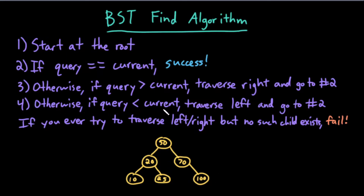Similarly, if my query is less than the current node, I would traverse left and repeat this process. Because every node in a given node's left subtree is less than that node, and every node in a given node's right subtree is greater than that node, if my query is less than my current node, I would not expect to see it in my right subtree, so I should just check my left subtree. If I ever try to traverse left or right but there is no such child, then I would fail.